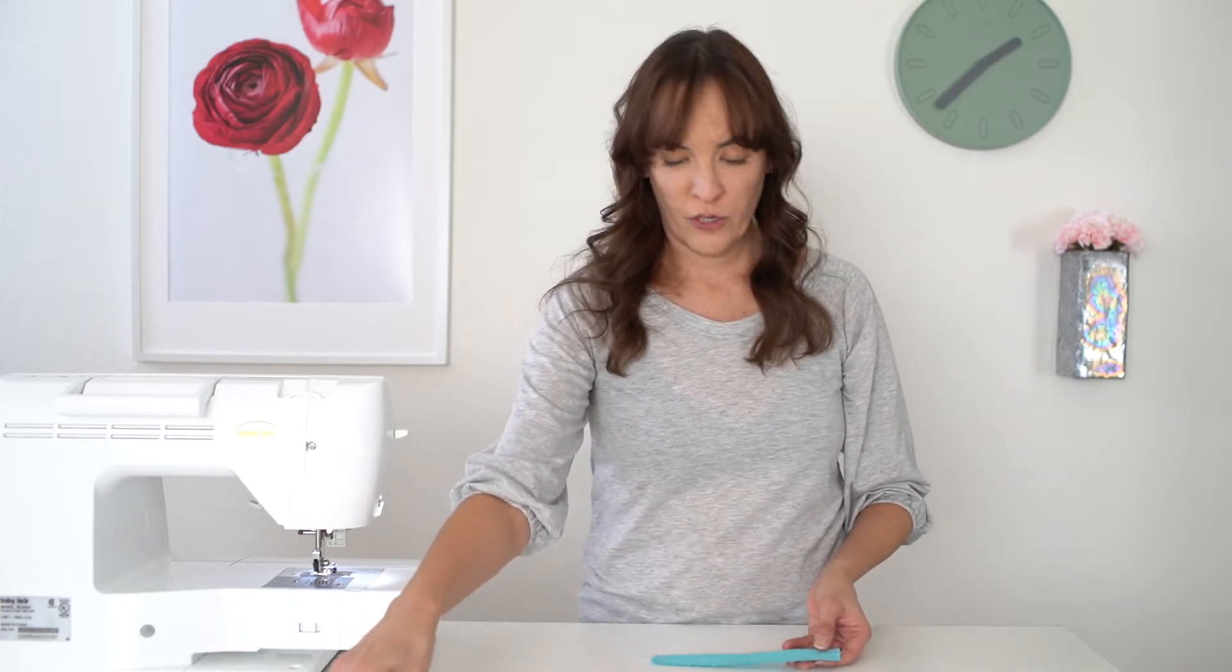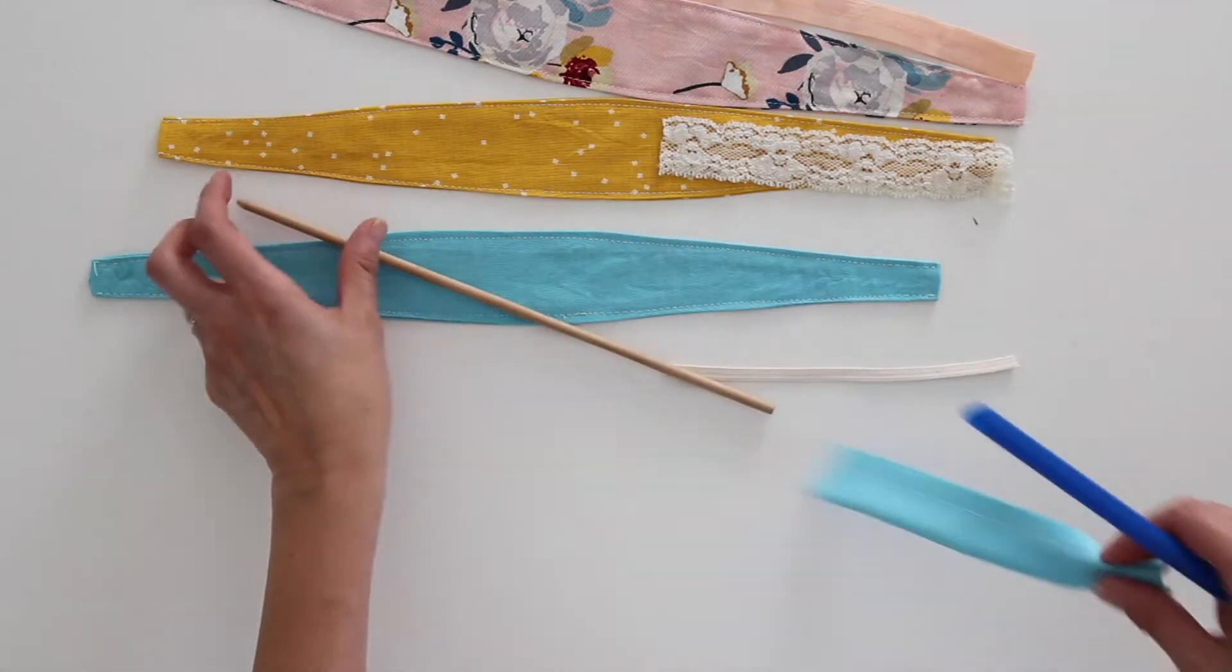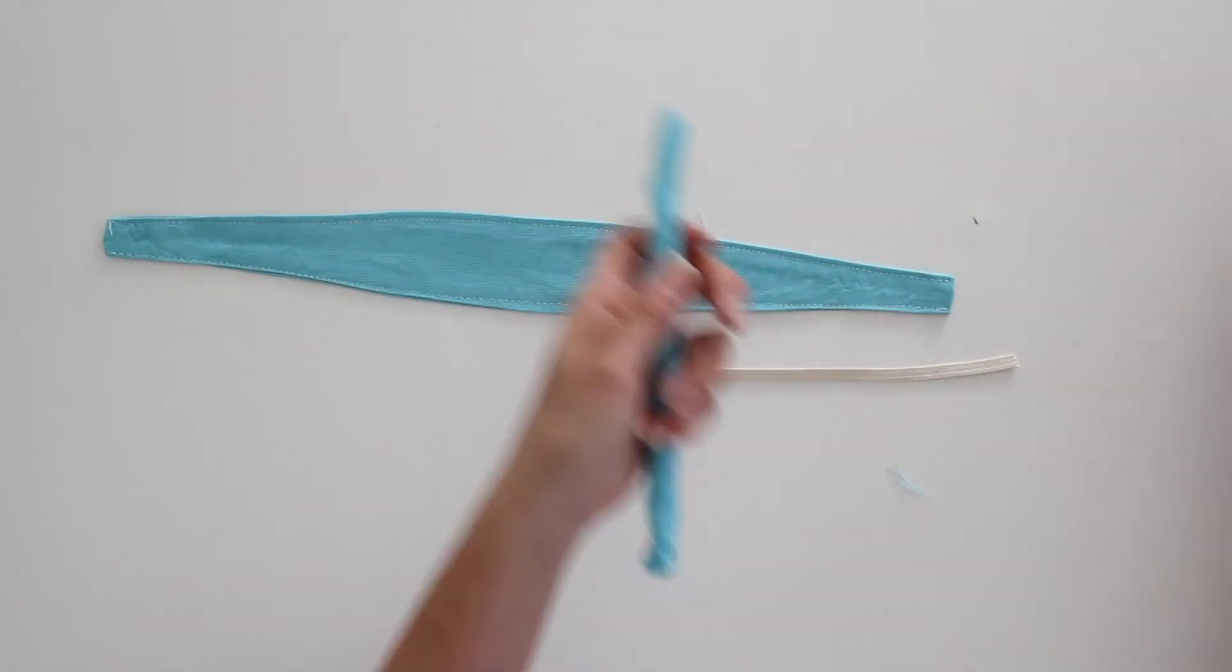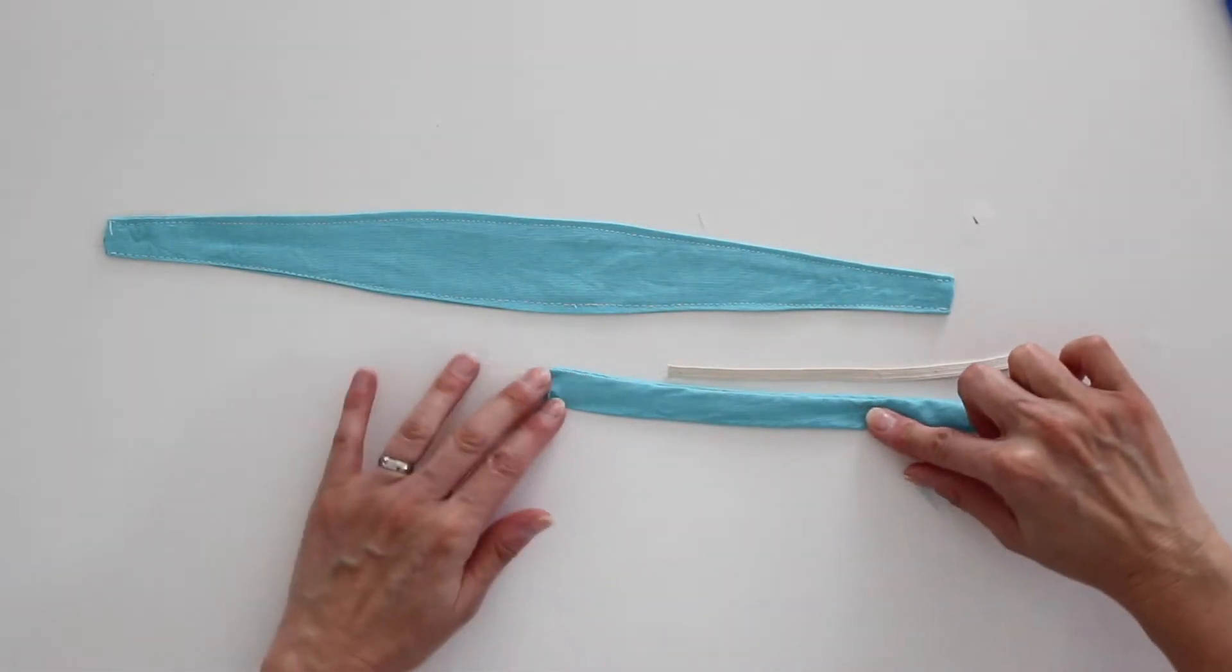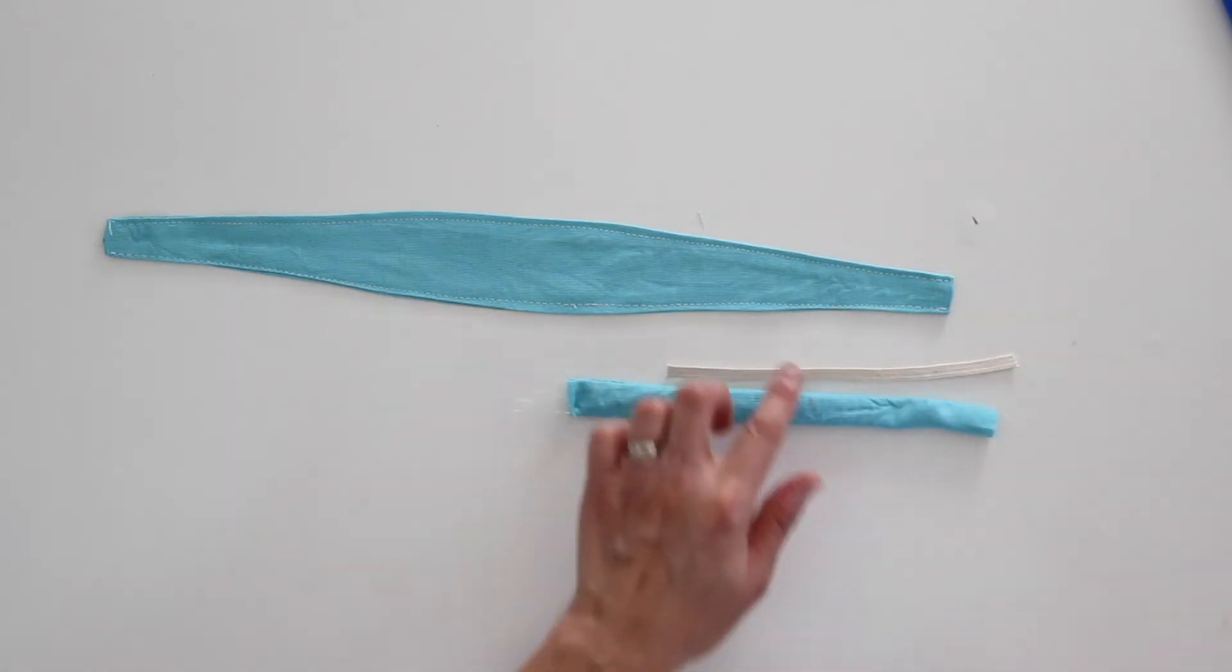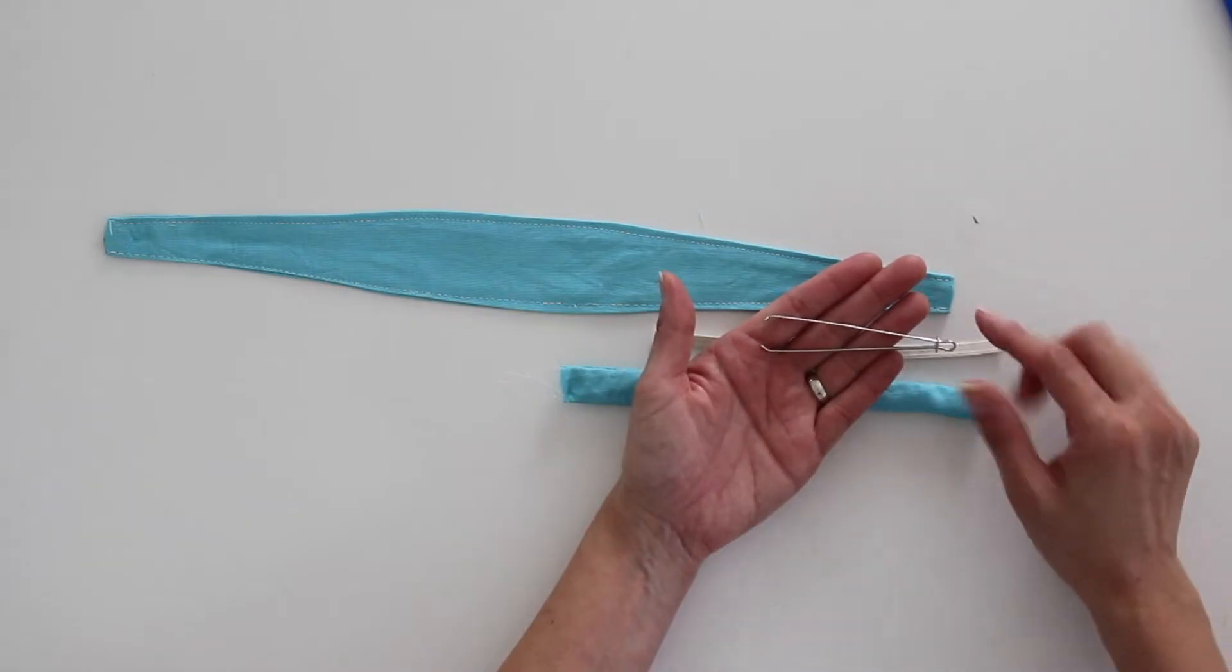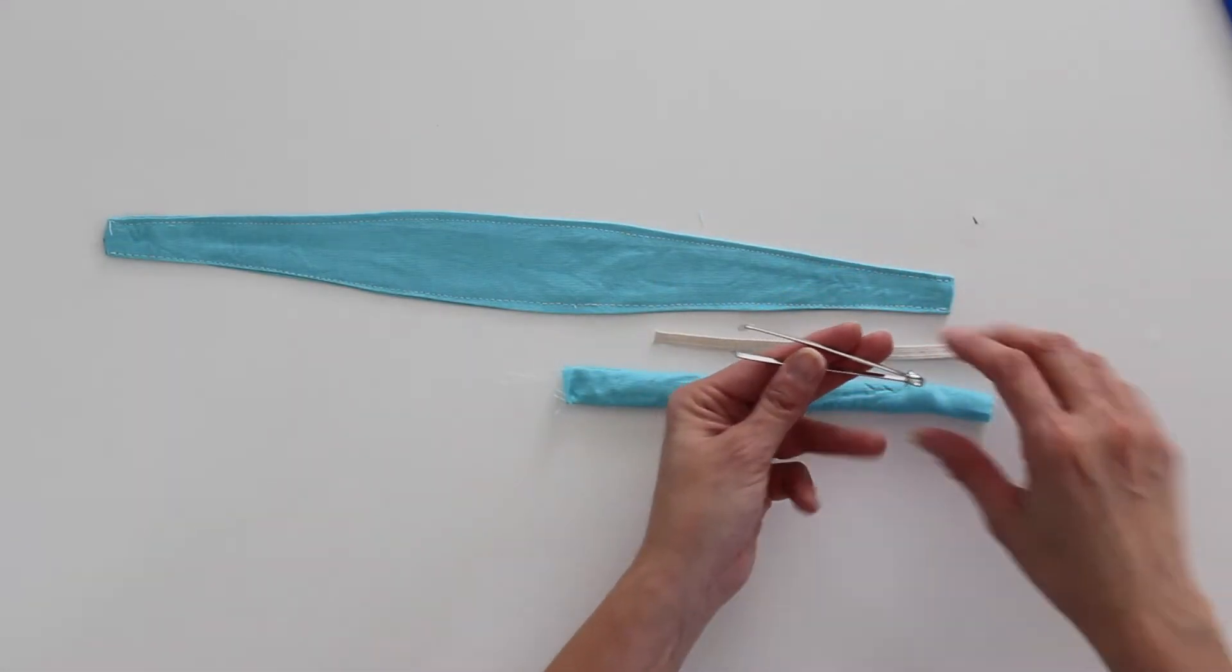Once again, I'm going to use my tube turner to turn this right side out. And then I need to insert the elastic through the tube. So to insert this elastic, I'm going to use this tool. This is called a bodkin and I've linked this below.